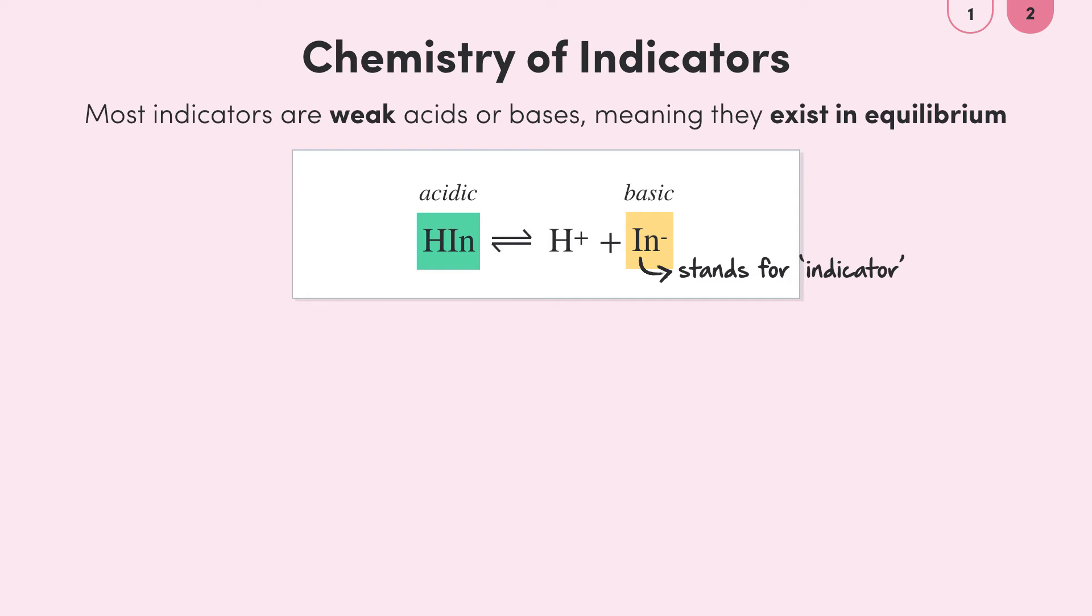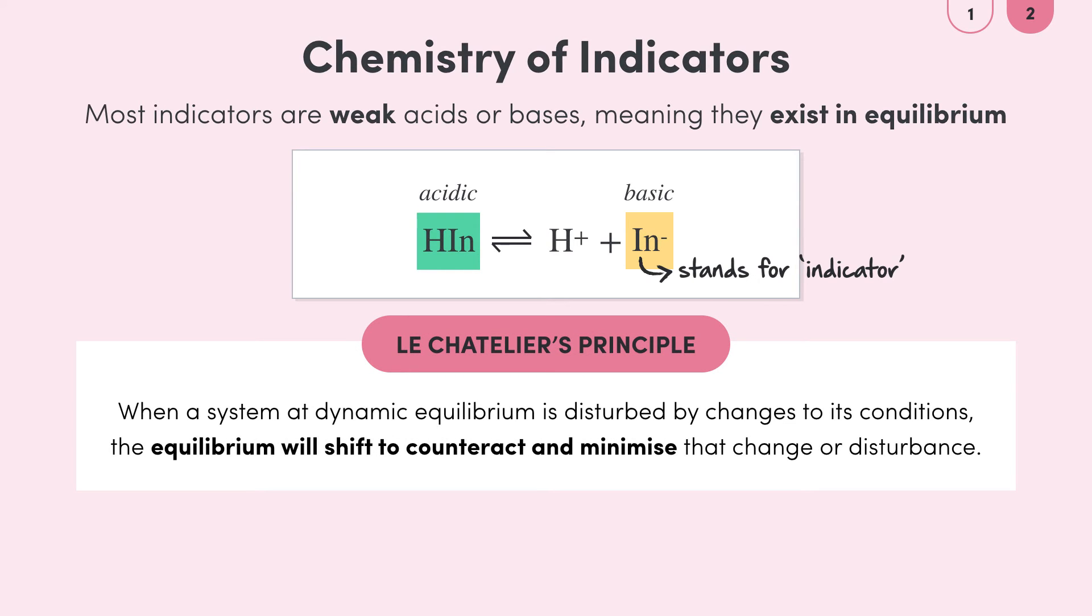We can explain how all indicators work through Le Chatelier's principle. Le Chatelier's principle states that when a system at dynamic equilibrium is disturbed by changes to its conditions the equilibrium will shift to counteract and minimize that change or disturbance.